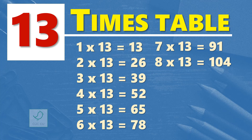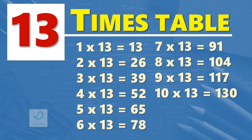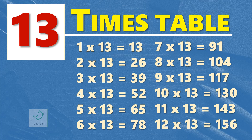7 times 13 are 91. 8 times 13 are 104. 9 times 13 are 117. 10 times 13 are 130. 11 times 13 are 143. 12 times 13 are 156.